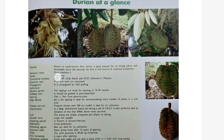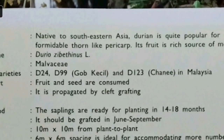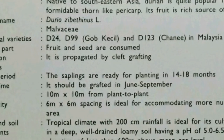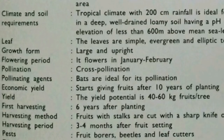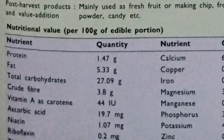First, let's discuss Durian. Its scientific name is Durio zibethinus and its family is Malvaceae. The commercial varieties most likely to be asked in JRF are D24, D99 (also called Gome Cassil), and D123 (also called Cheney). It is propagated by cleft grafting, pollination is cross-pollination chiefly done by bats, a phenomenon called Chiropterophily. Durian is also a rich source of proteins and vitamins.